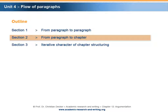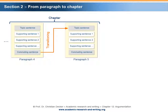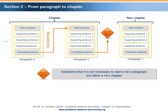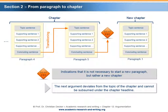Section 2 – From paragraph to chapter. As seen in the previous unit, the flow of paragraphs within a chapter should be developed by logically structuring one's arguments. However, the flow of paragraphs within a chapter will come to an end. Note the following indications that it is necessary to start not a new paragraph but a new chapter. The next argument deviates from the topic of the chapter and cannot be subsumed under the chapter headline — or, in other words, within a given chapter there is no main idea left that could be stated in a new topic sentence.